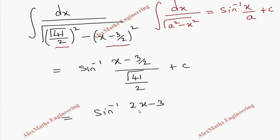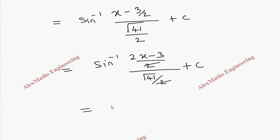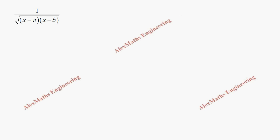To simplify (x − 3/2) / (√41/2), we take LCM, giving sin⁻¹((2x − 3)/2 ÷ √41/2). Cancelling the 2s, the final answer is sin⁻¹((2x − 3)/√41) + C.